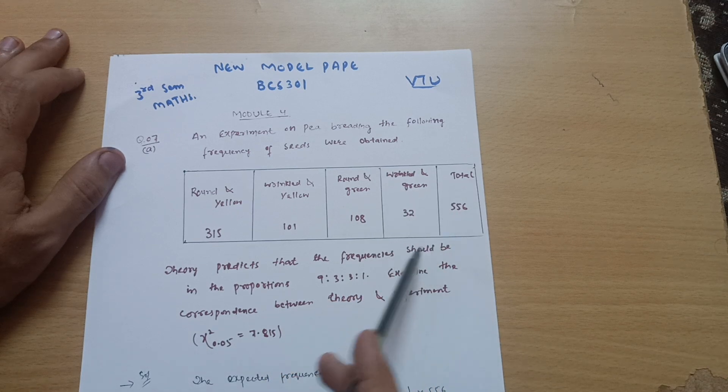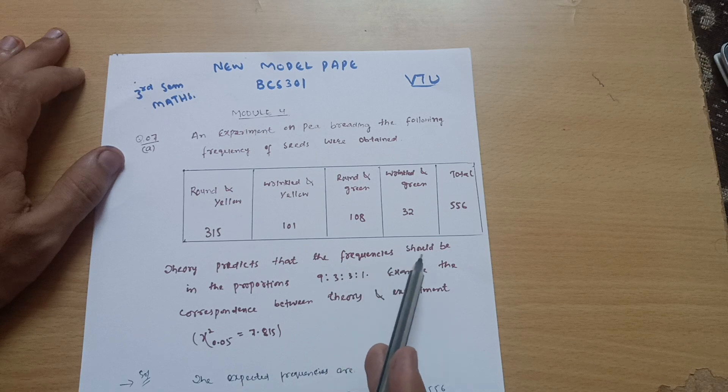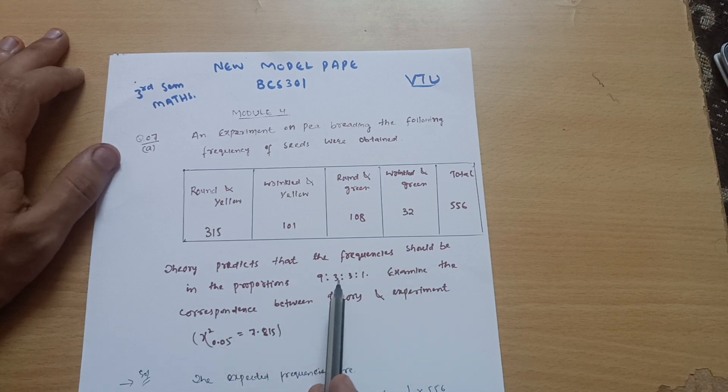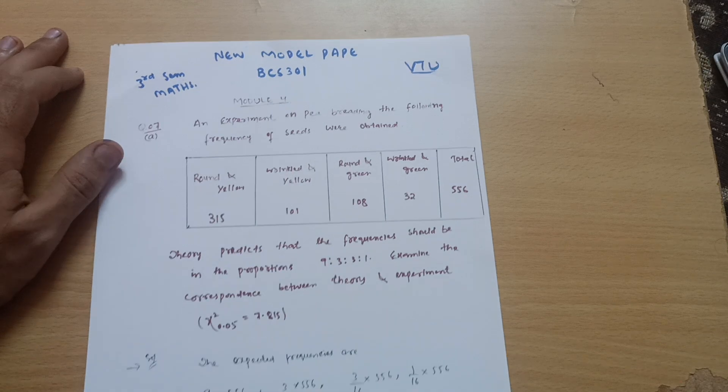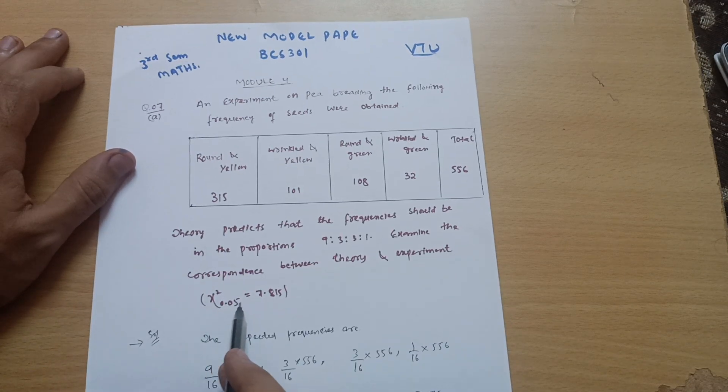Total is 556. Theory predicts that the frequency should be in the proportions 9:3:3:1. Examine the correspondence between theory and experiment. Chi-square 0.05 is given as 7.815.